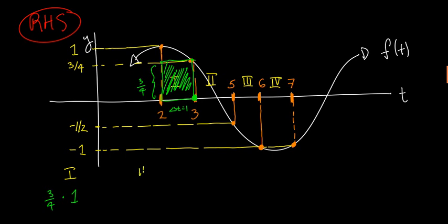For rectangle 2, we take the right endpoint, which is going to be 5. It's negative there — the height is negative 1/2. The length of that rectangle is 2, because 5 minus 3 is 2. So we multiply the height negative 1/2 by 2.